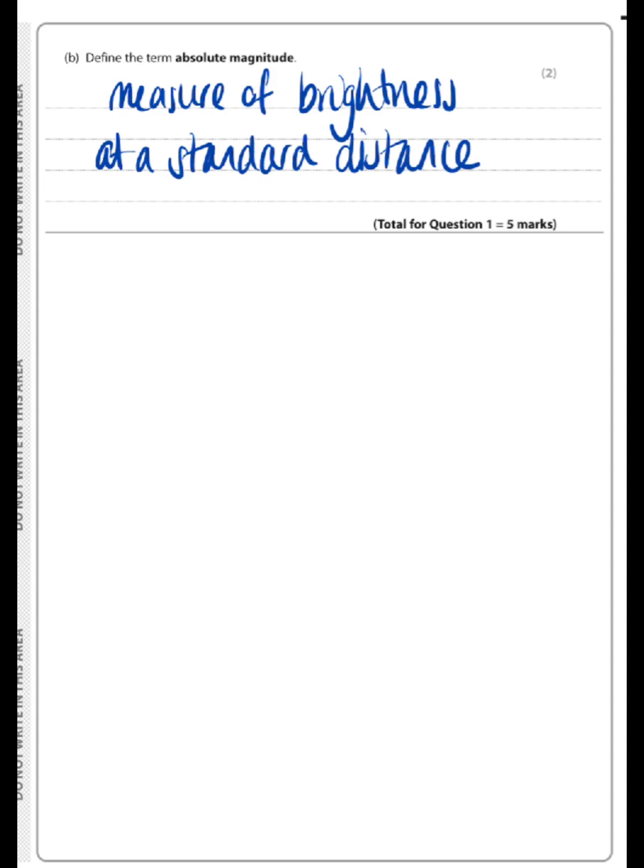Now, if you happen to know what that distance is, you could say at a distance of 10 parsecs or 32.6 light years, but you're not required to remember those numbers. It's sufficient to just say it's a measure of brightness at a standard distance, or a fixed distance, or at the same distance, and those two points will get you both of the marks.